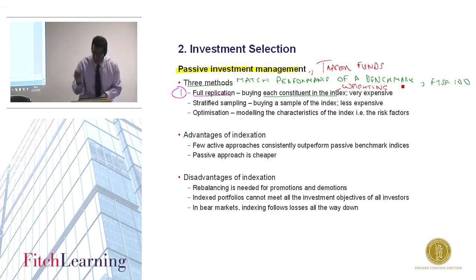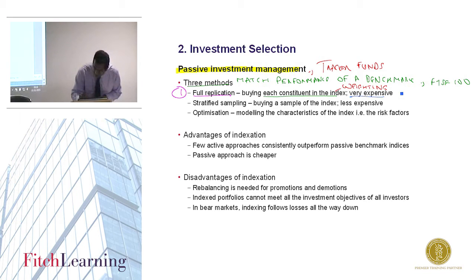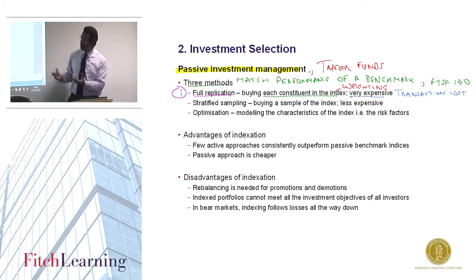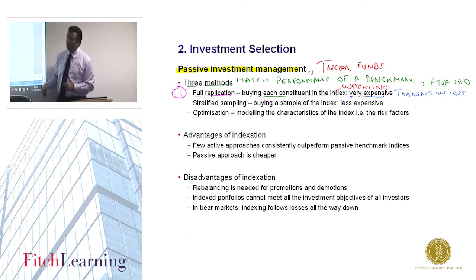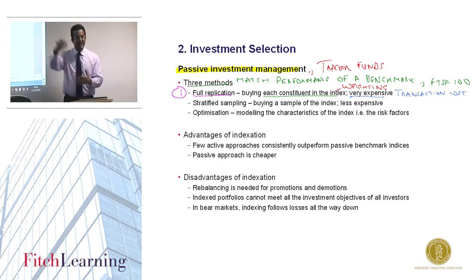Full replication is also costly not just to set up but to maintain, because the index doesn't stay the same. Rebalancing is necessarily needed when the weightings go out of sync — this is especially true for equal-weighted indices, where you want to keep the same monetary amount invested in each asset. Assets that lose value require you to buy more, and assets that gain value require you to sell, creating ongoing trading costs.